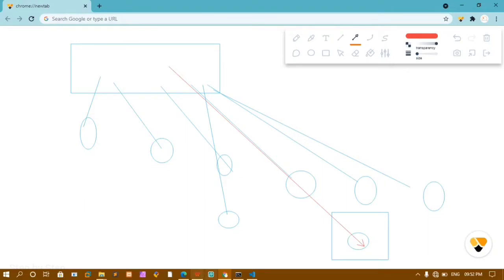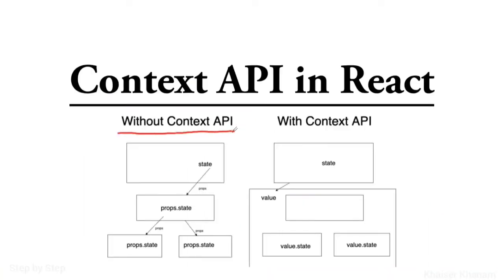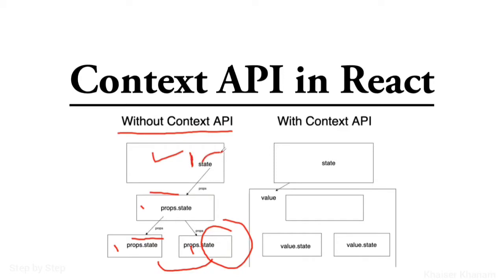Here is an example without Context API. I'm having a state, and I have three props — one, two, and three. First I have to send data to the first component, then to the second, and then to the third. If I want access to the parent's data in the third-layer component, I have to send it layer by layer. At one point we ourselves will get confused about what we're doing and what data we want to send.